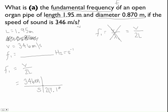so 2 times 1.95 meters. You can see here that these meters are both going to cross out.